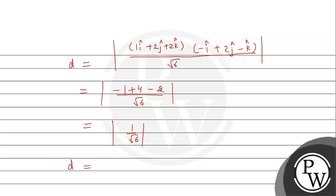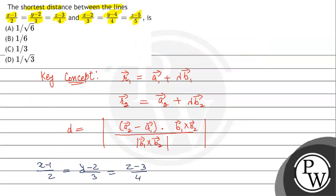So the shortest distance is 1/√6, which is our final answer. Matching with the given options, option A is the correct answer, which is 1/√6. I hope you all understand it well. Best of luck.